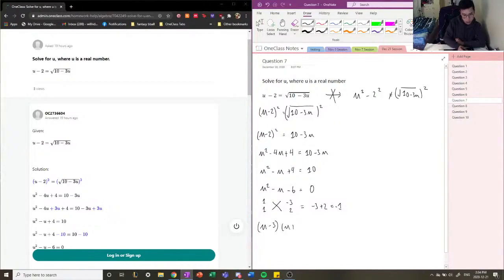Now, based on our previous questions, we're going to find the zeros: u minus three equal to zero and u plus two equal to zero.